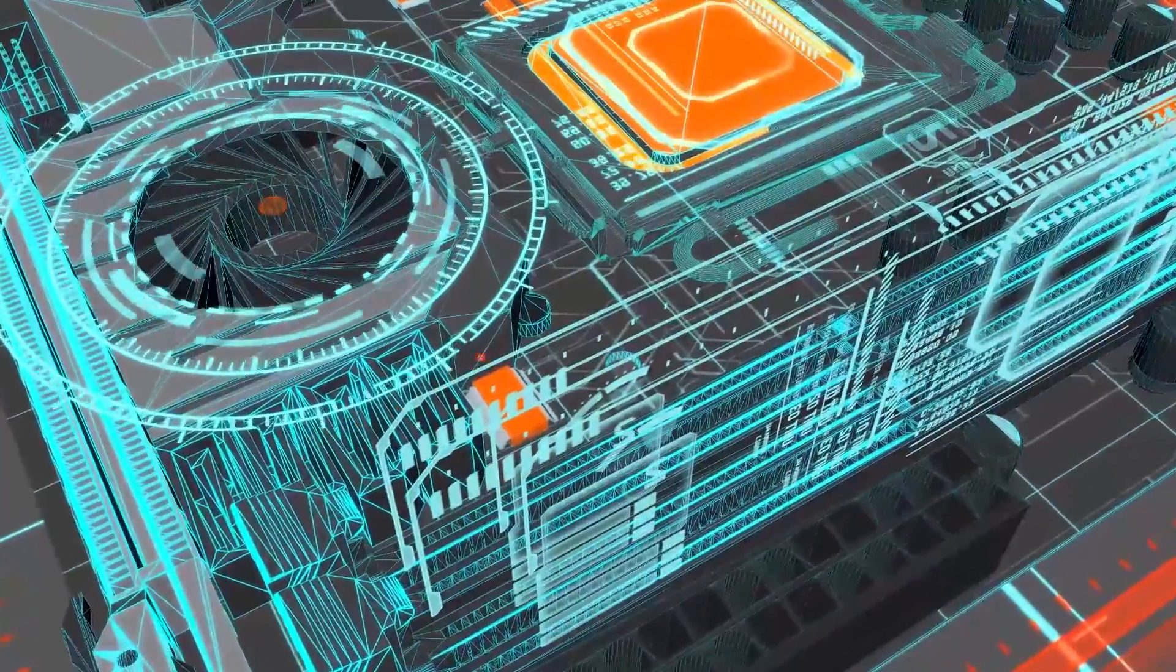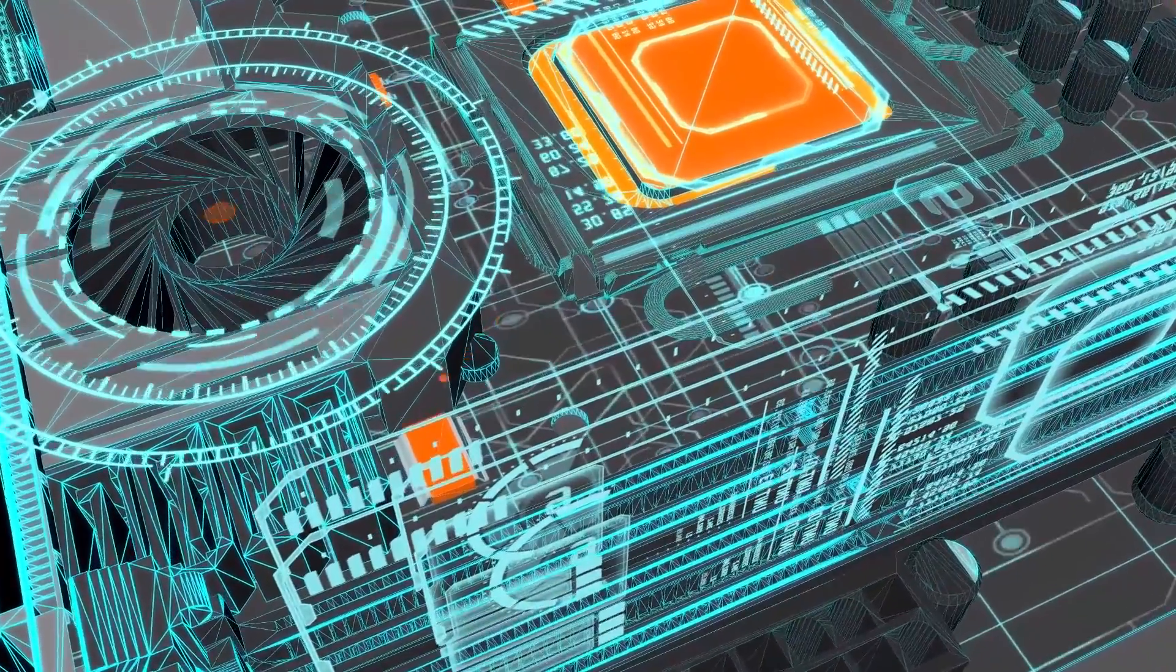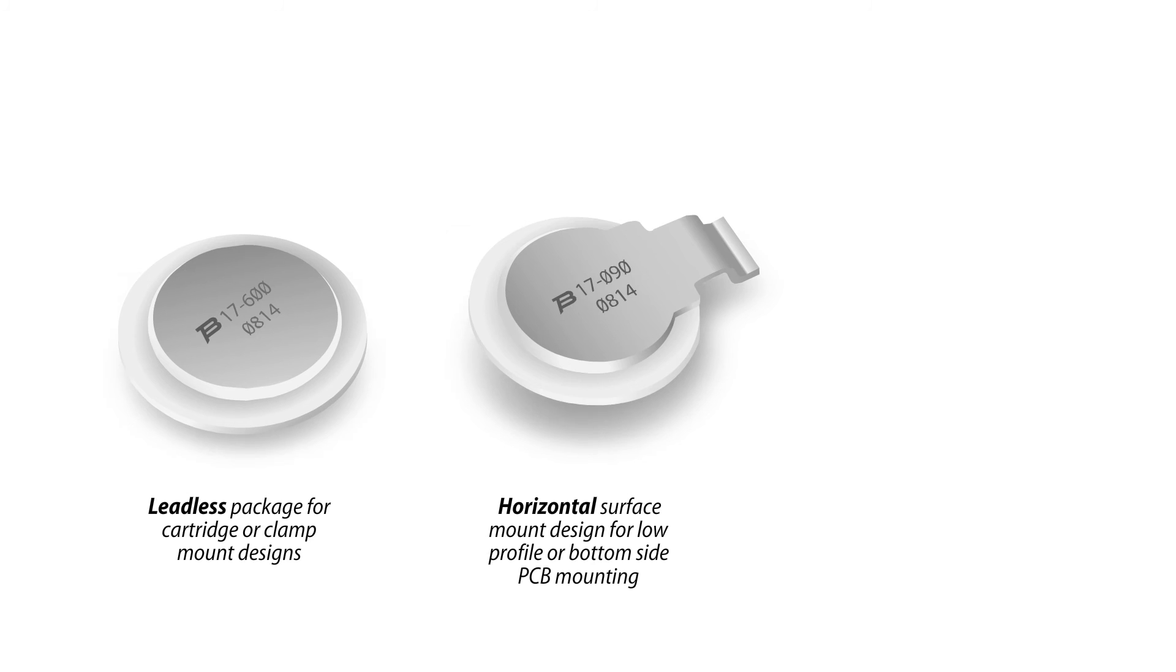Satisfy your high-performance circuit protection needs with the right flat GDT for your design. The model 2017 series is a two-electrode GDT available in three package sizes including surface mount.